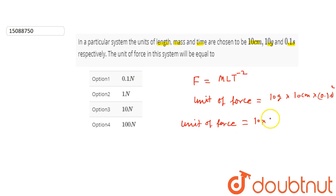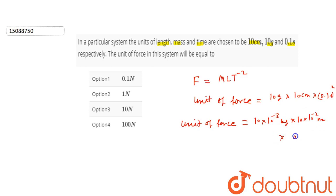If you are going to change from grams to kilograms, multiply by 10 to the power minus 3. Then centimeters convert to meters: 10 to the power minus 2 meters. And 0.1 second squared.